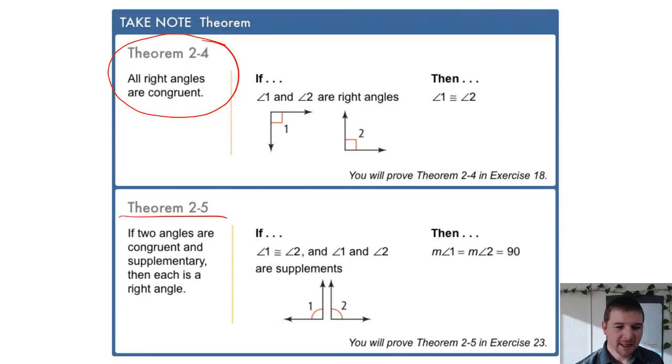Theorem 2-5 states if two angles are congruent and supplementary, so they're congruent and add up to 180 degrees, then each angle is a right angle.